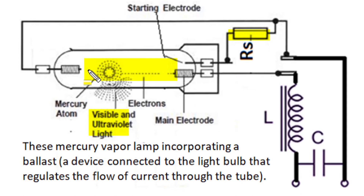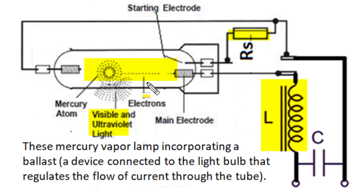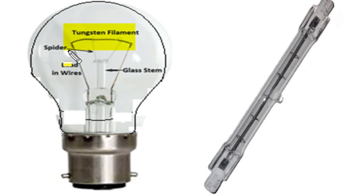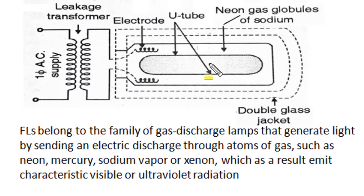Arc discharge has a negative resistance characteristic, so inductive chokes are used to control current in these arc discharge lamps. The inclusion of these chokes causes a power factor problem, so shunt capacitors are used across the supply voltage. Ordinary incandescent lamps have lumen efficiency of 10–15 lumens per watt, halogen lamps 15–20 lumens per watt, while fluorescent lamps belong to a family of gas discharge lamps that generate light when excited electrons in gas atoms transit to lower energy states.